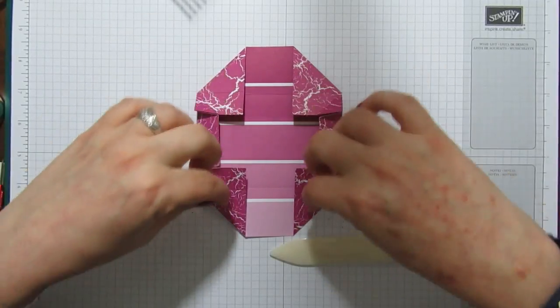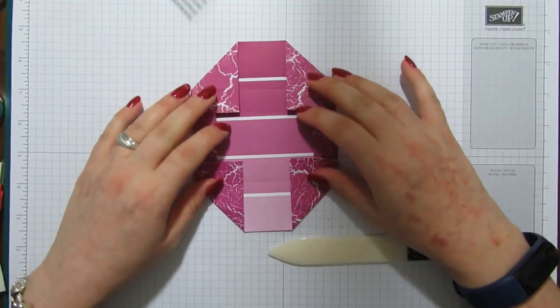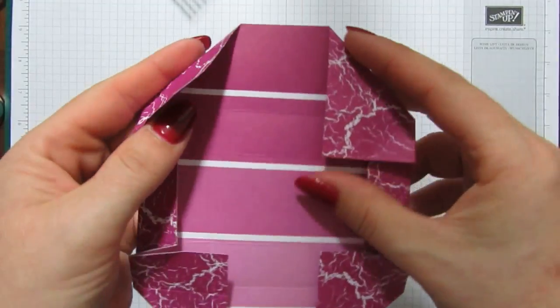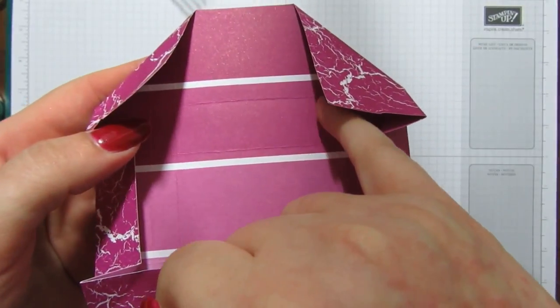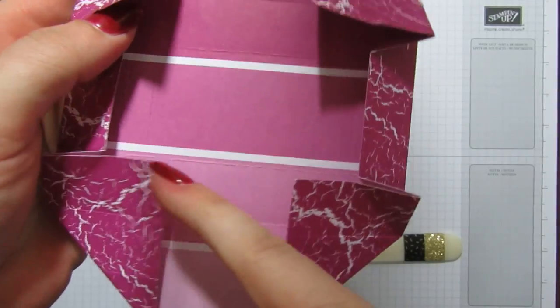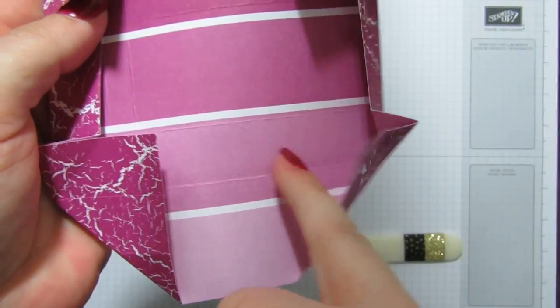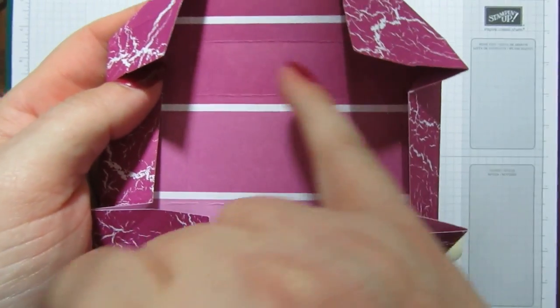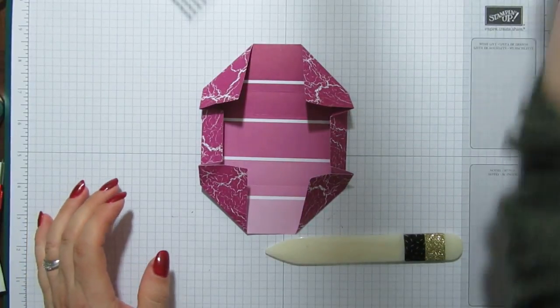Now you want to turn it this way so this time you've got those two skinny score lines running down. And what you're going to do is you've got, can you see like a kind of rectangle here and a rectangle in here? We need to put tape in this rectangle just to the score lines together.